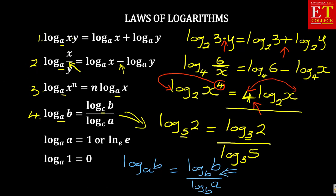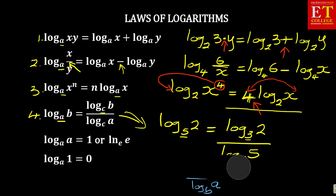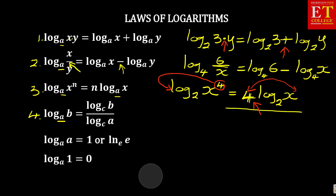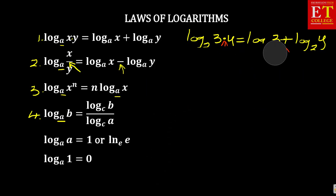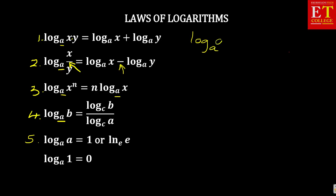Law number 5 says: log base A of A is equal to 1 — a very important law. For example, log base 2 of 2 is equal to 1. Log base of any number — it can be 10 — the moment you repeat that same number as the argument, you get 1.